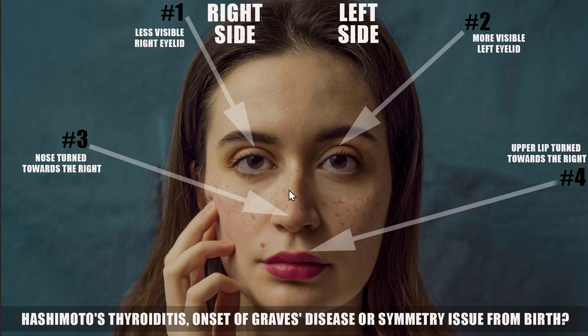Not all of us are perfectly symmetrical — most of us aren't actually. And I'm not picking on this girl's beauty; she's a beautiful young lady. But I'm trying to show you some issues that you may want to look out for, because it may be an indication of thyroid dysfunction. Hashimoto's comes to mind so many times when you see this, if it's not something that's been present since birth.